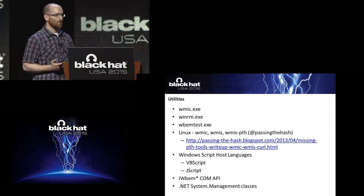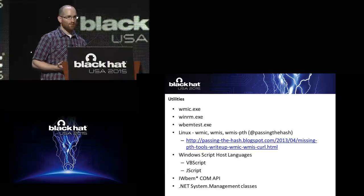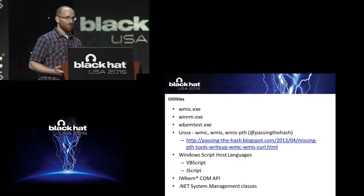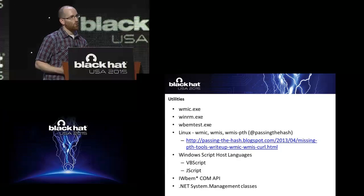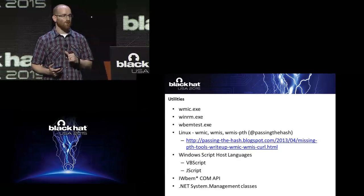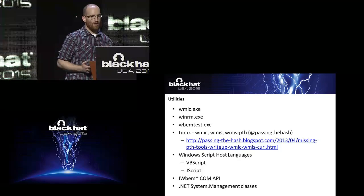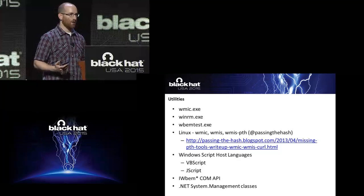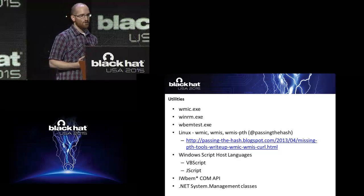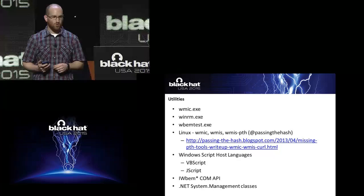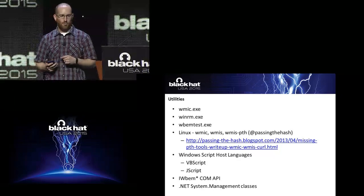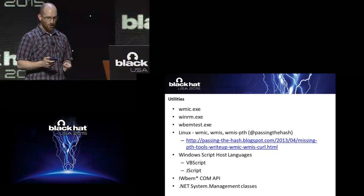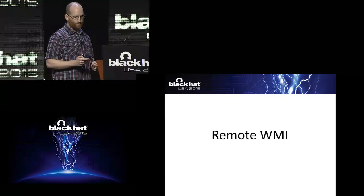There's also a bunch of Linux utilities. WMIC will accept any WMI query. WMIS is basically a wrapper for the Win32 process create method for lateral movement and code execution. A buddy of mine, Skip Duckwall, patched WMIS so that it will accept NTLM hashes, which is pretty cool. There are additional interfaces — VBScript, JScript — and if you're incorporating this into your code, you have COM APIs as well as some pretty full-featured .NET classes.